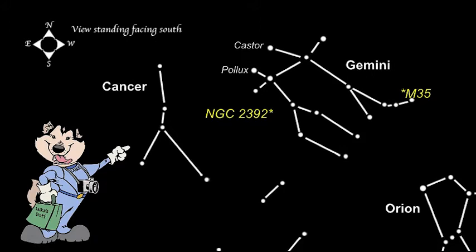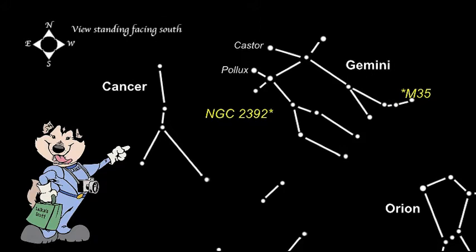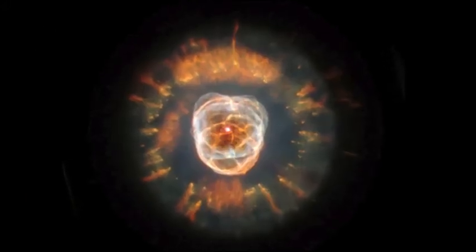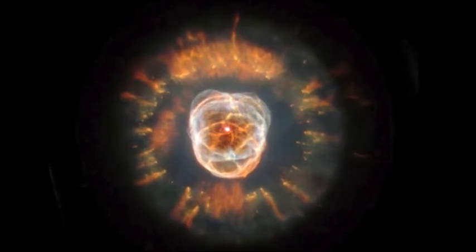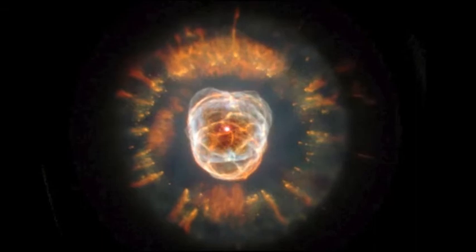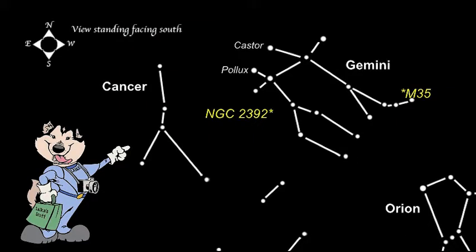NGC 2392 is the Eskimo Nebula. It can be seen using a small telescope. The Eskimo is a planetary nebula, the gases being thrown off of a dying star similar to our sun.